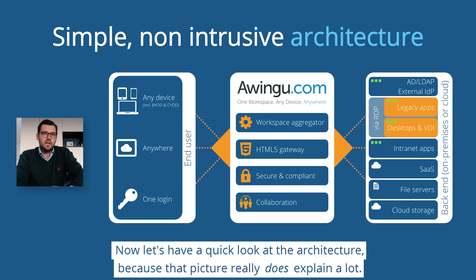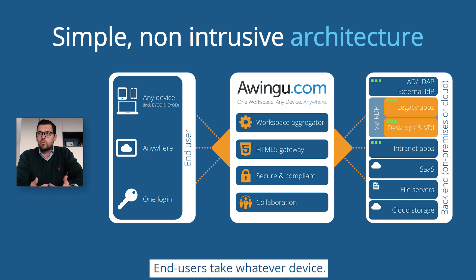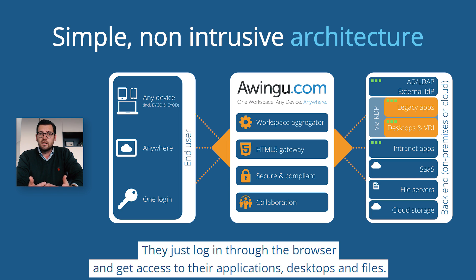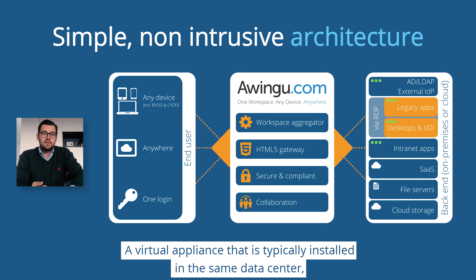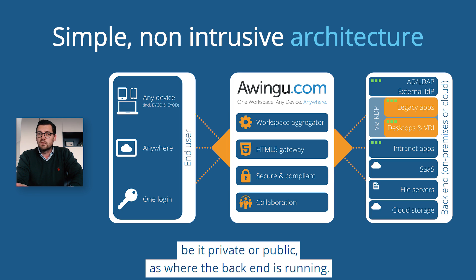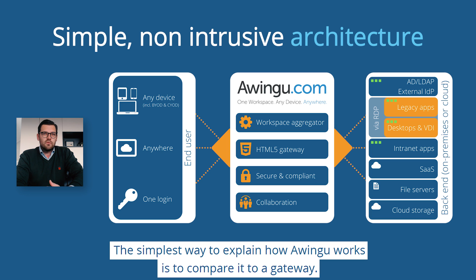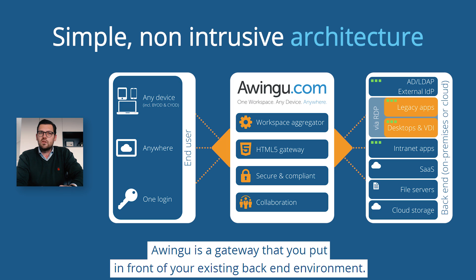Let's have a quick look at the architecture, because that picture really does explain a lot. Users take whatever device, log in through the browser, and get access to their applications, desktops, and files. Owingo itself is a virtual appliance, typically installed in the same data center — be it private or public — as where the backend is running. The simplest way to explain how Owingo works is to compare it to a gateway.